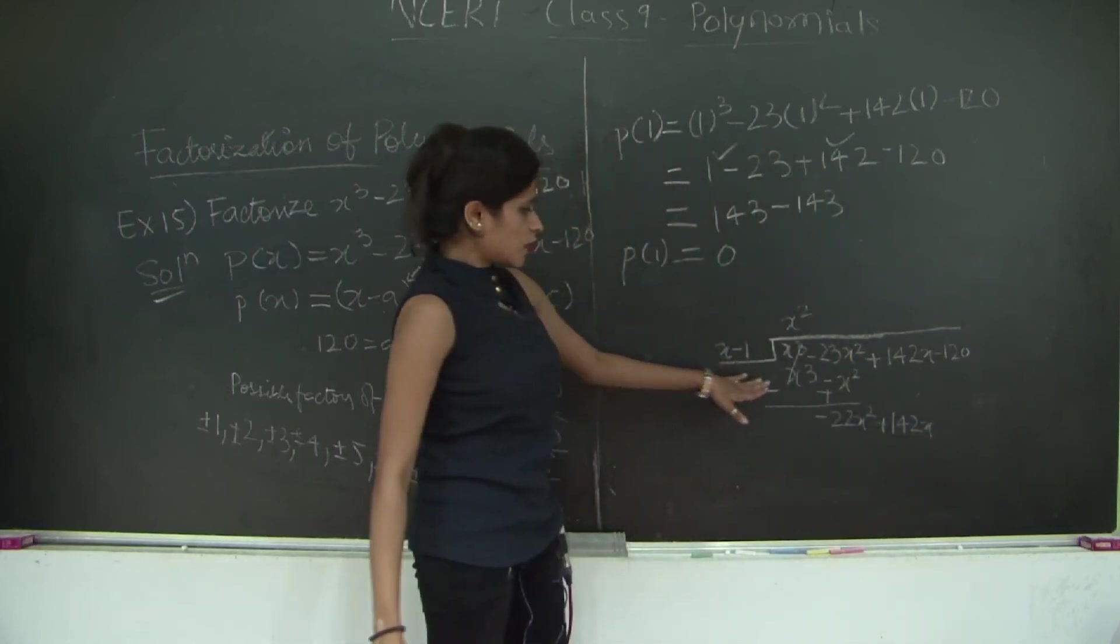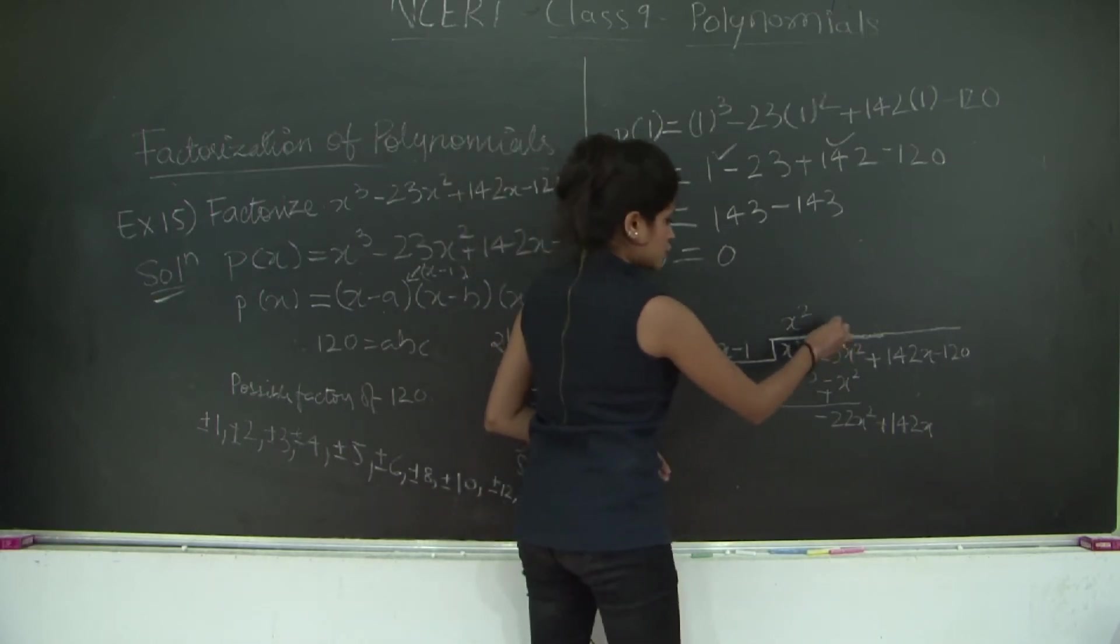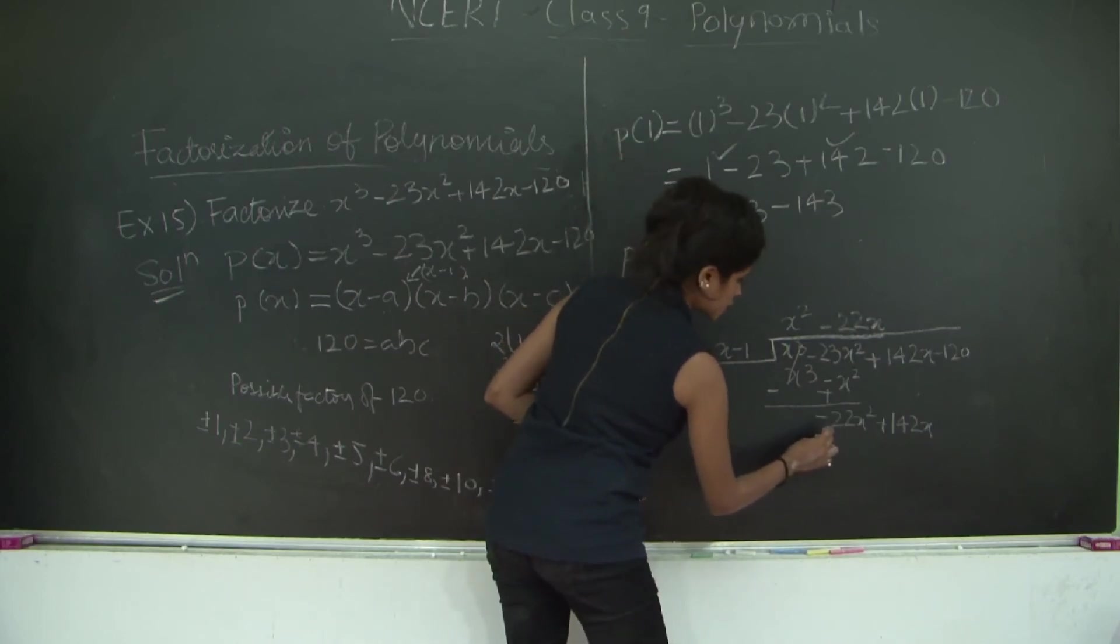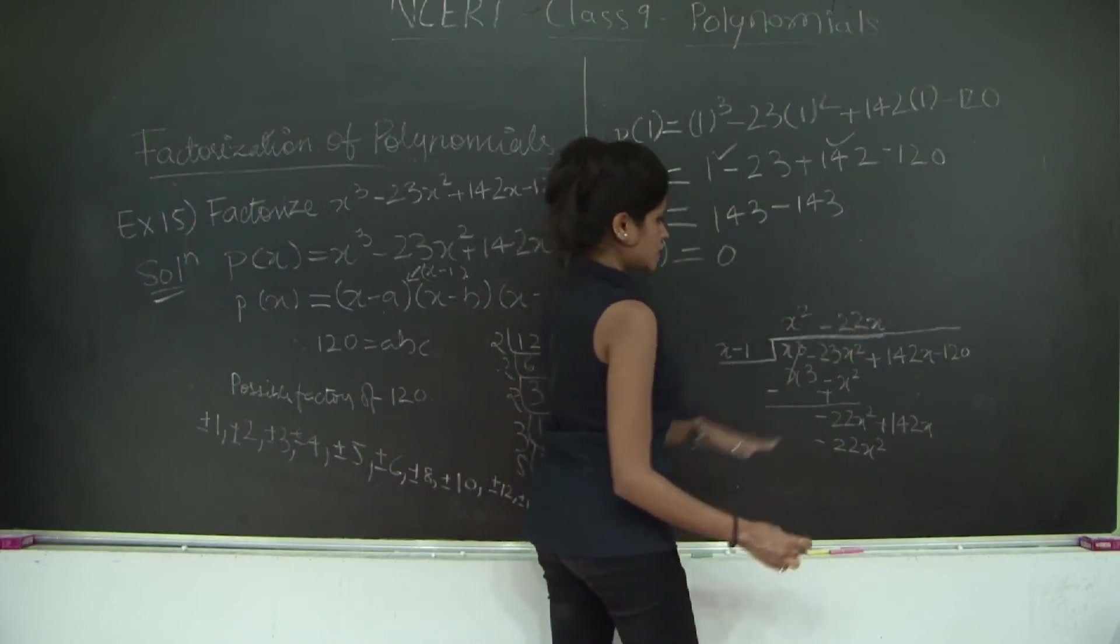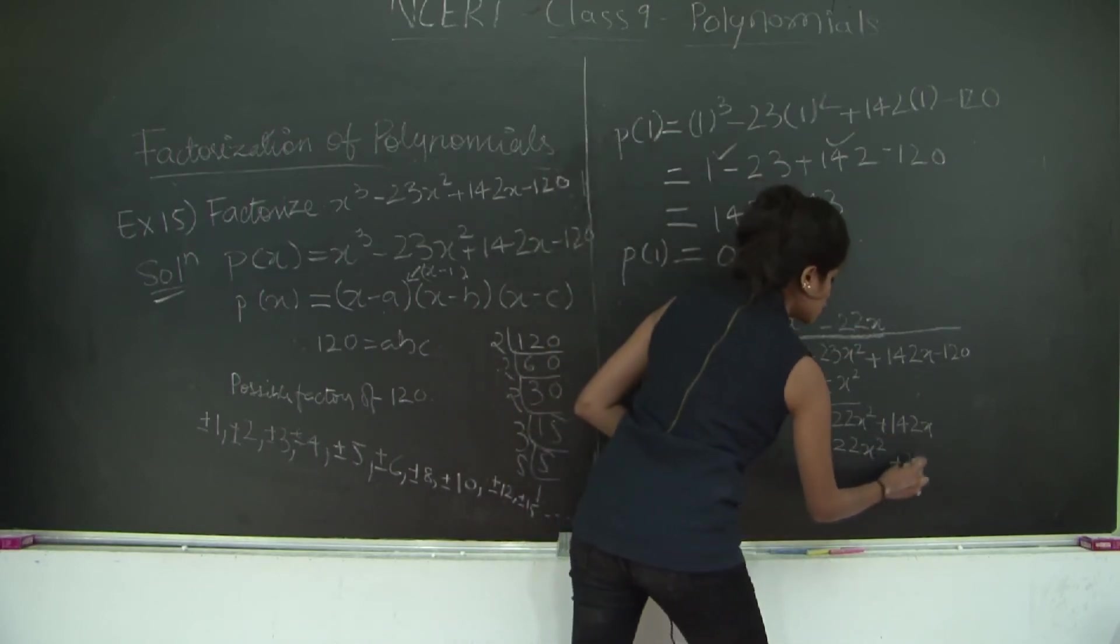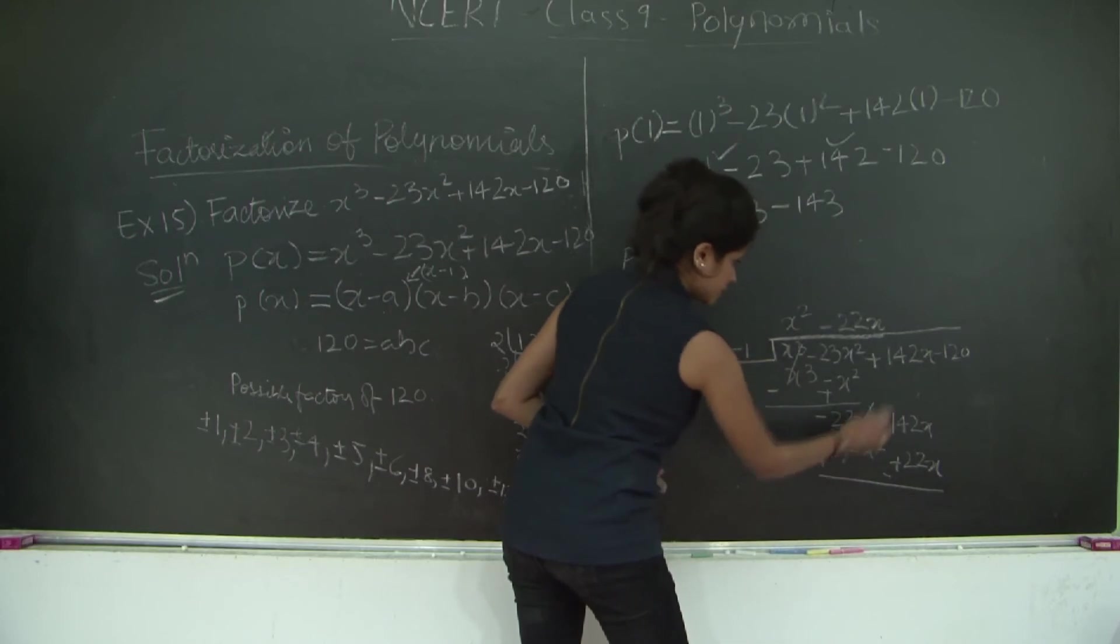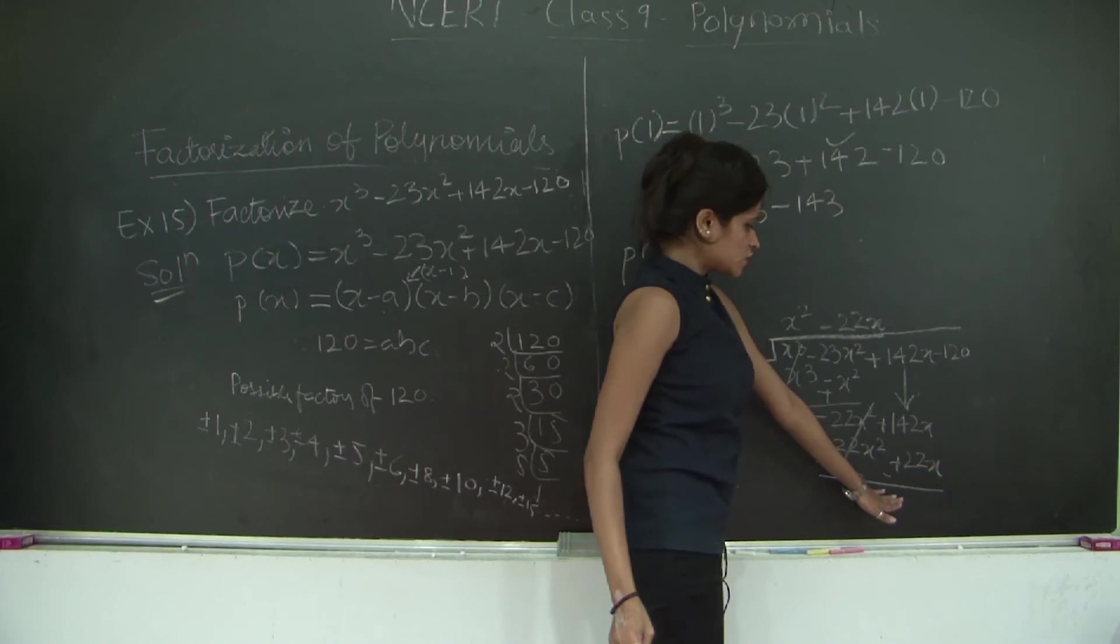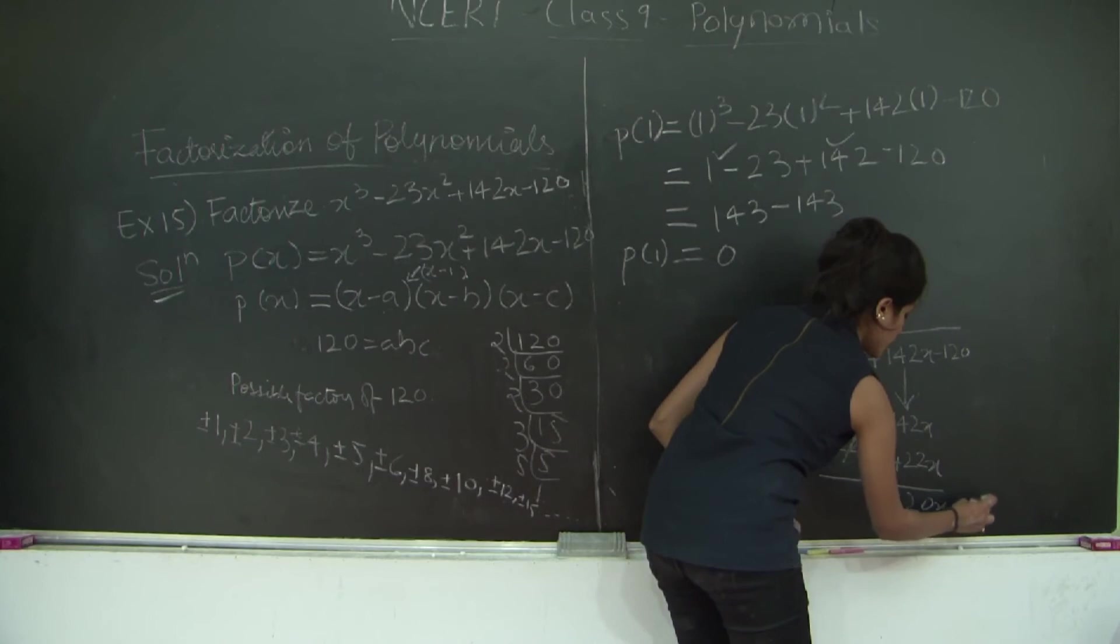Now x - 1 times what will give me -22x² as the first term? x times -22x. So this is -22x², minus 1 times -22x will be +22x. This becomes positive, this becomes negative. 142x - 22x = 120x - 120.